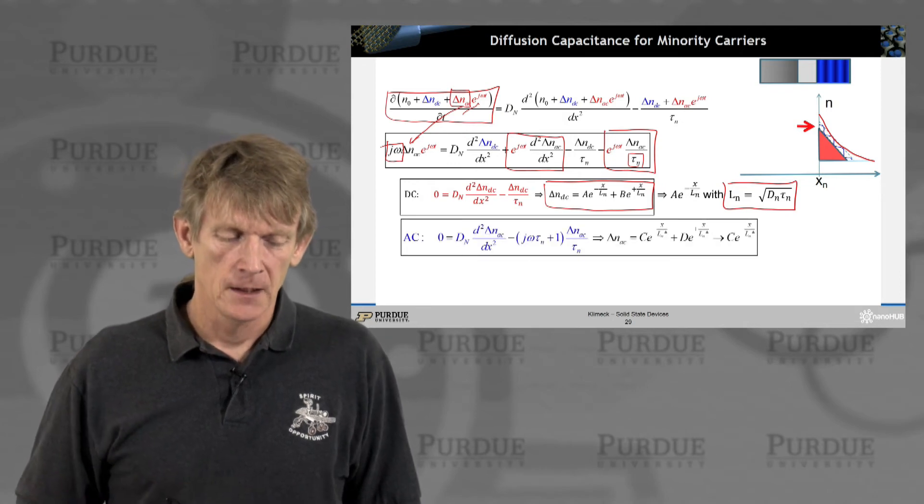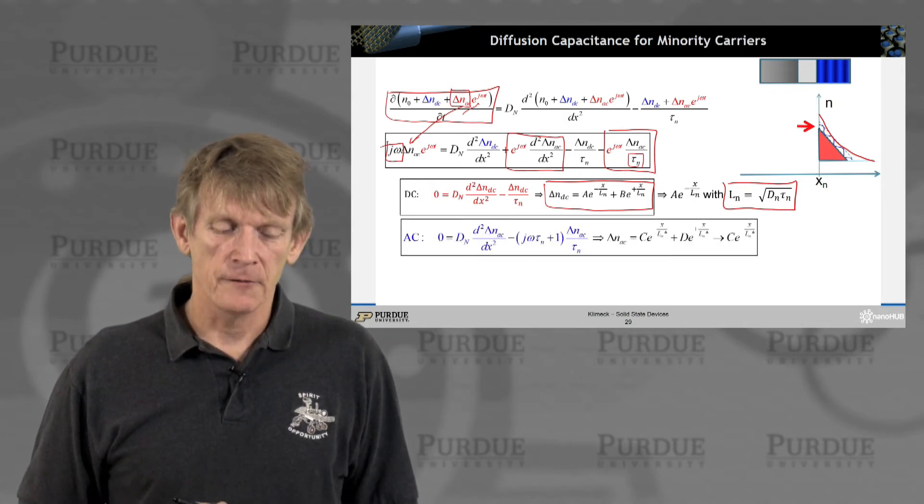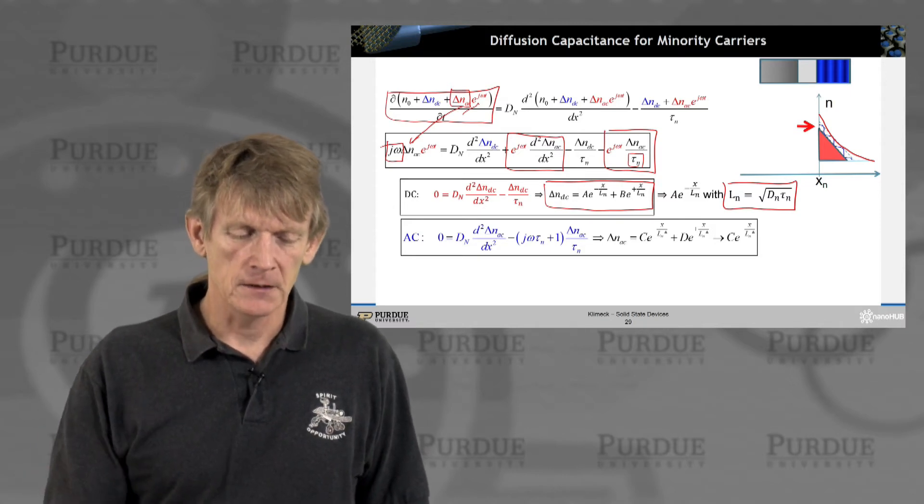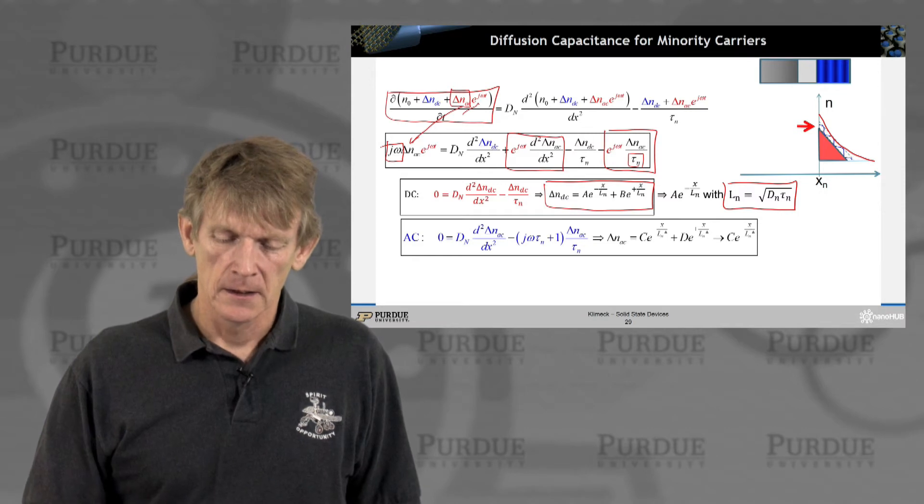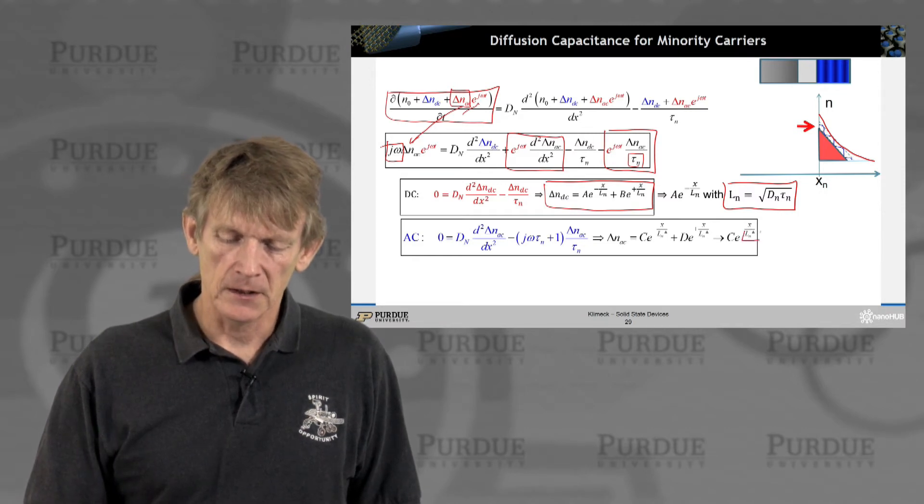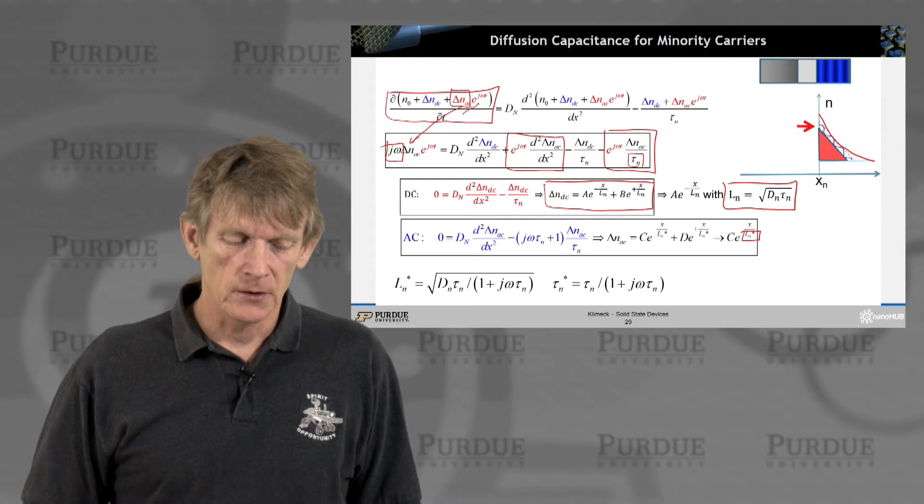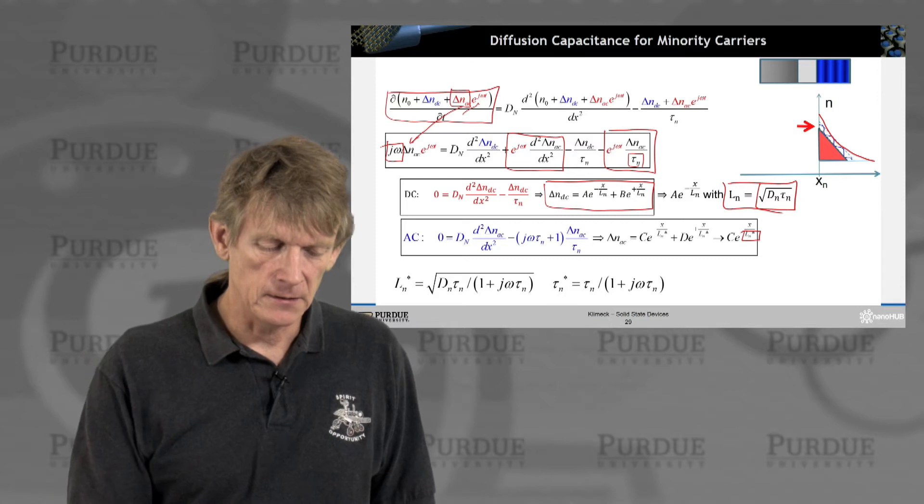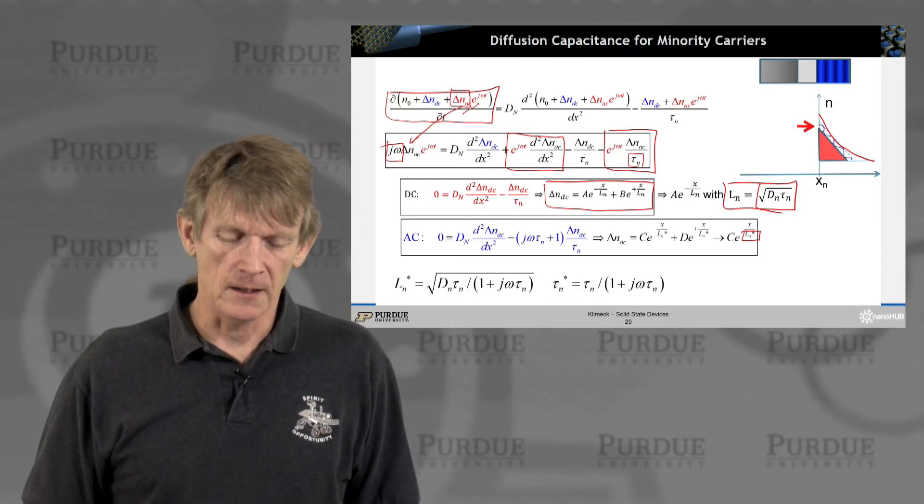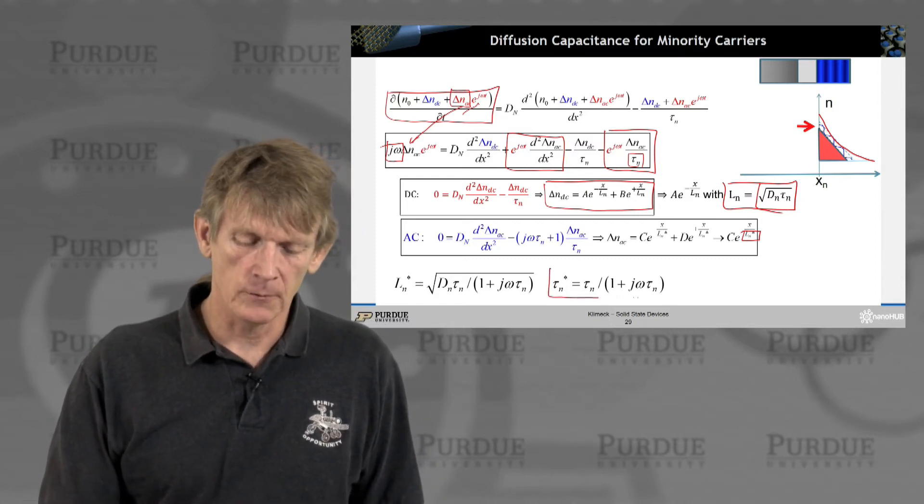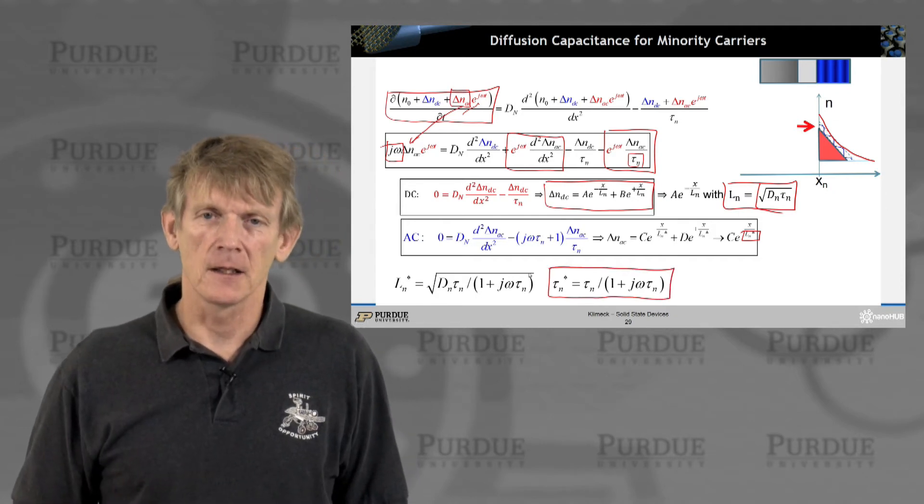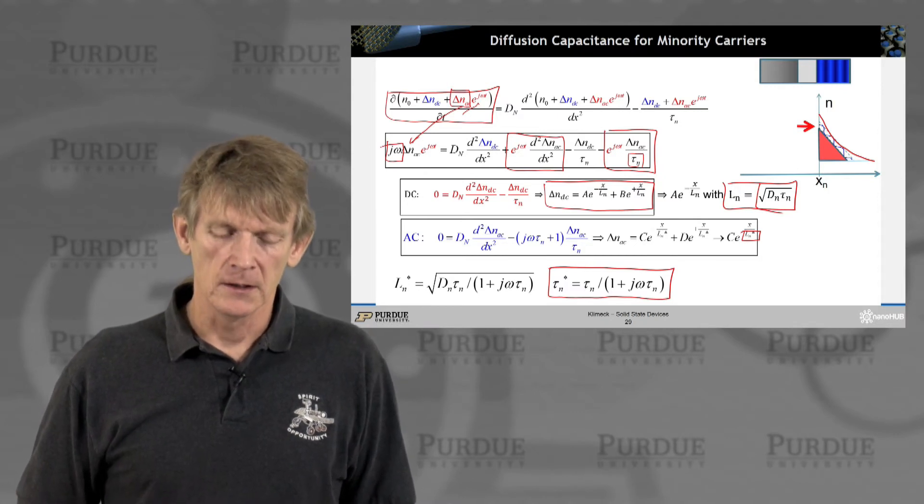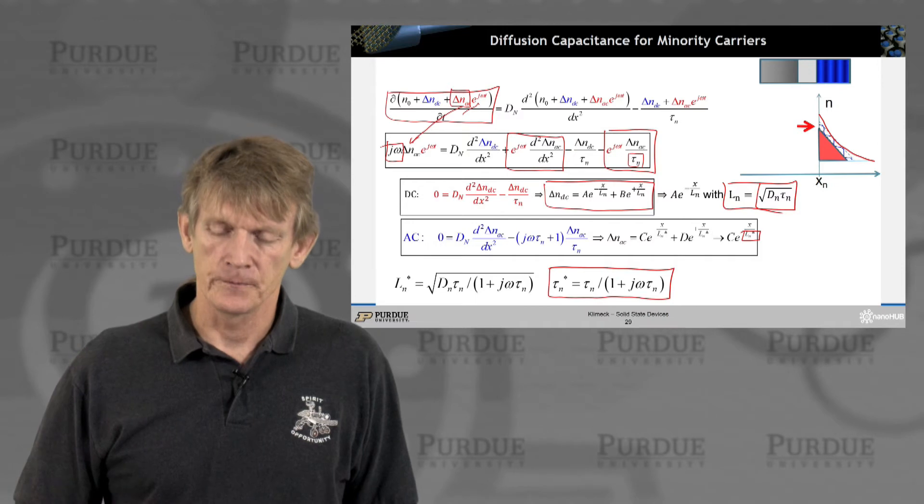Now for the AC term, I find something equivalent. I can write down the same type of expression, but except for having an L, I'm going to label this decay rate an L star, which turns out to be very similar looking to this guy here. But it's divided by 1 plus JWTN. And so I have a complex minority carrier lifetime, if you will, that looks just like this. It's modulated by 1 over J omega tau.